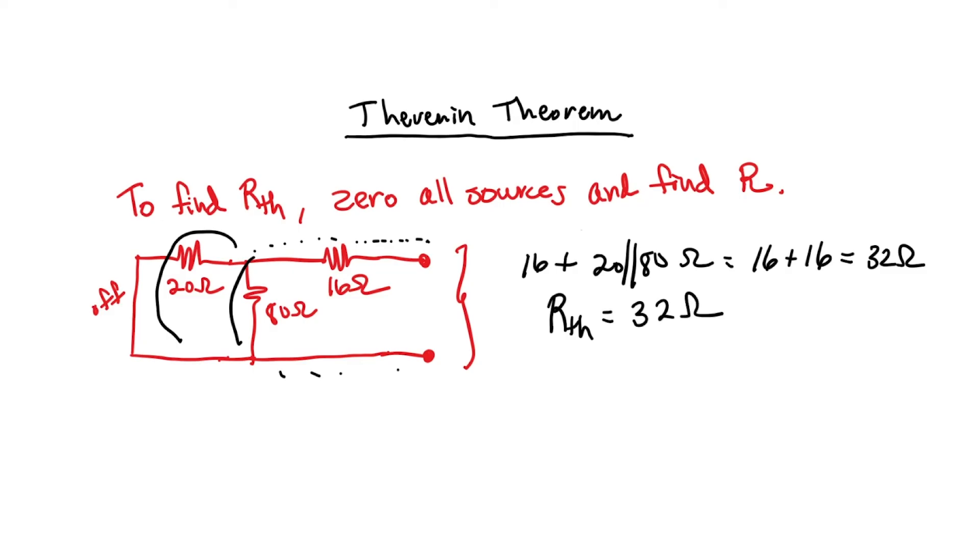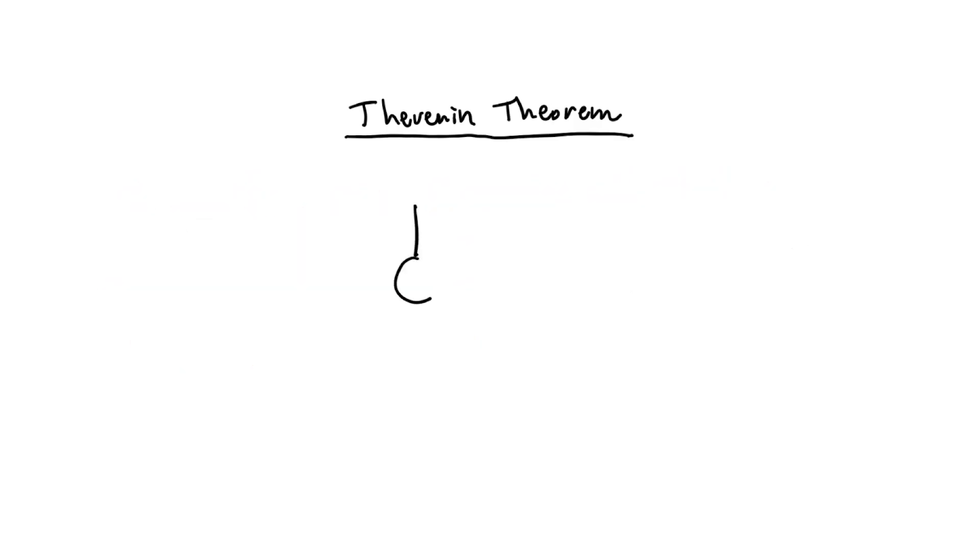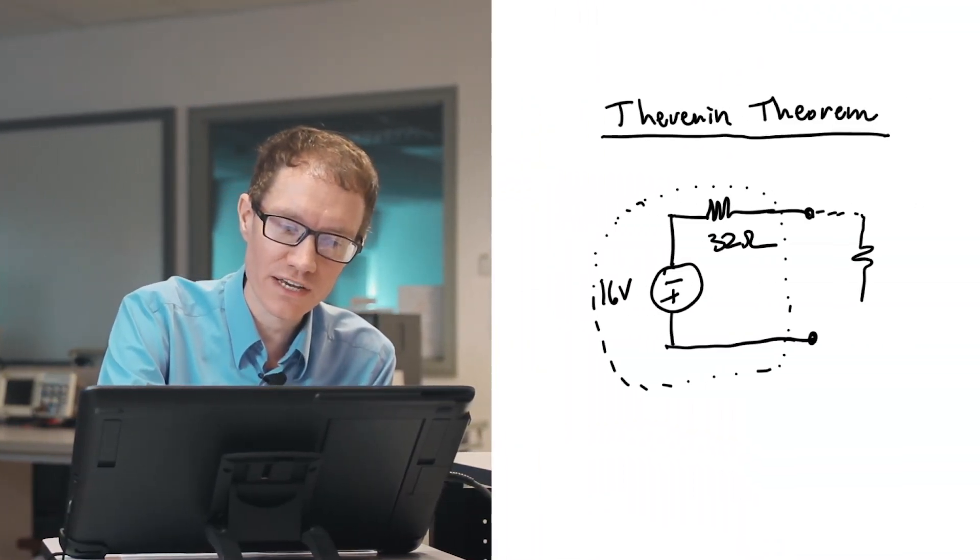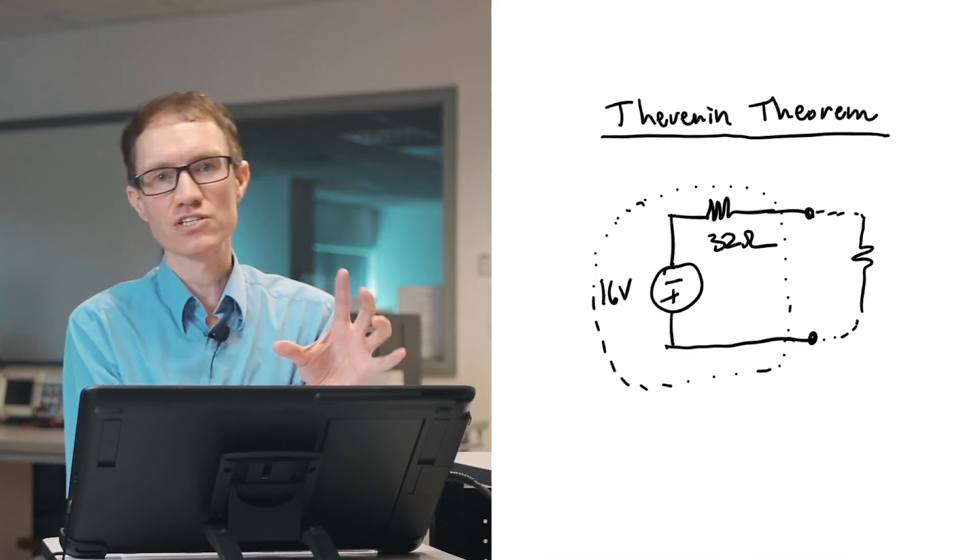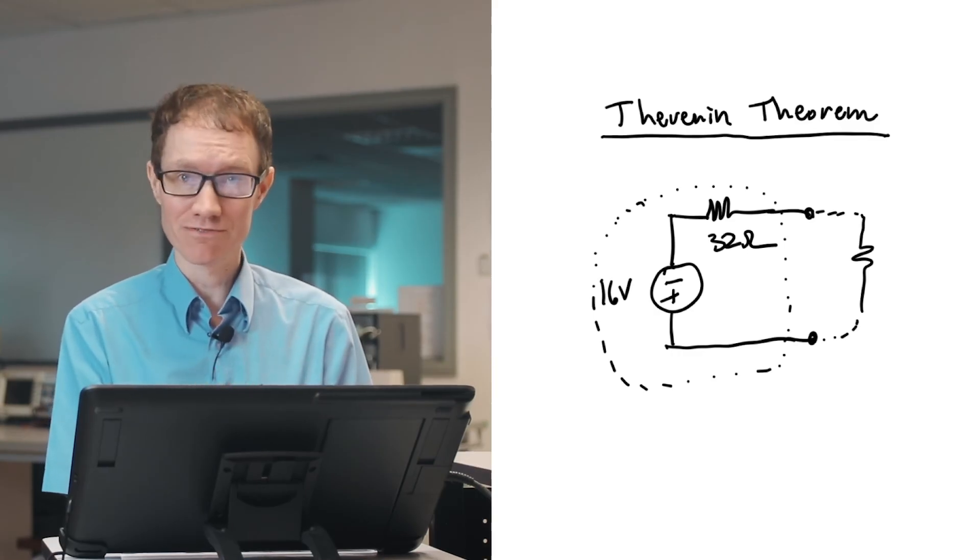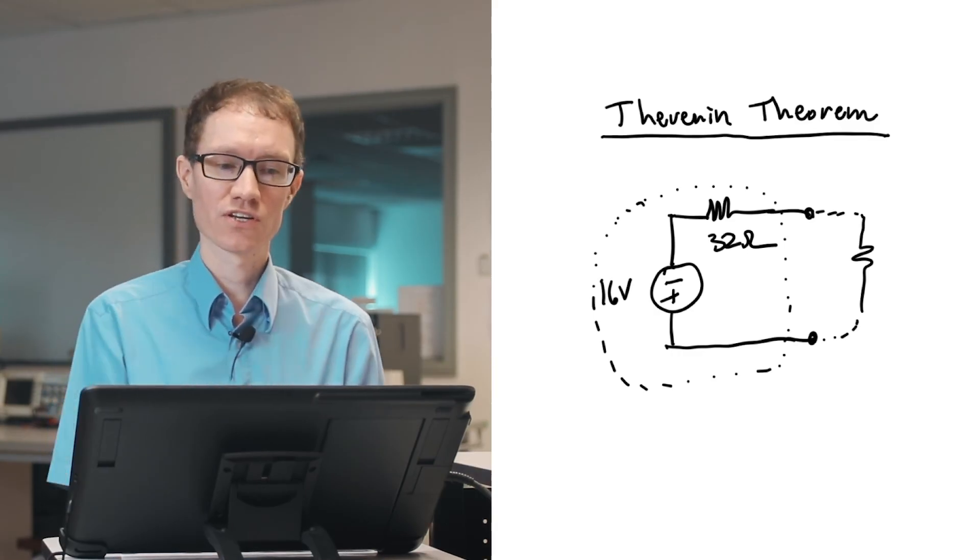All right, so what does all this mean? It means that if I were to build a circuit that has a 16 volt source turned upside down, and a 32 ohm resistor, and I put it into a black box, and you can't see what's inside. You compare the performance of this circuit with the circuit that I drew that was more complicated, that had three different resistors, I won't be able to tell these circuits apart. Meaning if I attach a resistor to the circuit at the outside terminals, and I start to vary that resistor, and I measure the voltage and the current through that resistor, it's not going to behave any differently than the circuit that's more complicated.